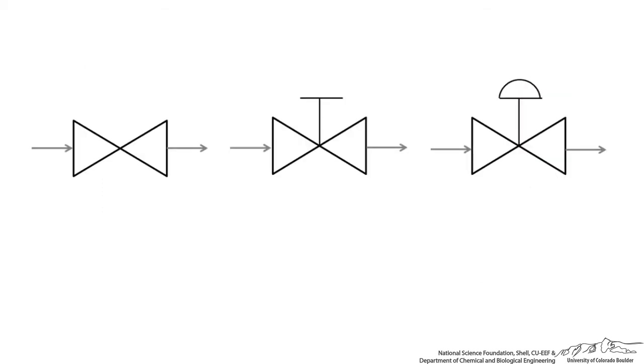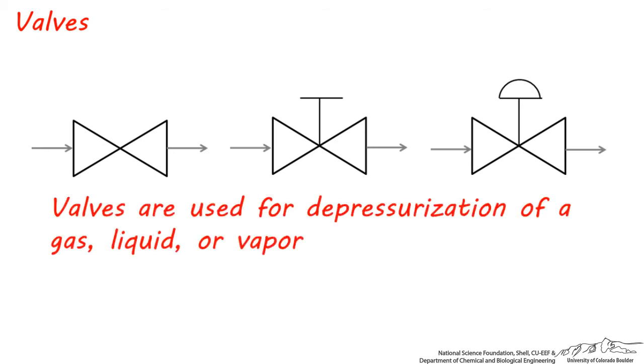You've probably seen these symbols on a variety of diagrams. They're especially prevalent on piping and instrumentation diagrams. See if you can remember what these are. These are all valves, and on a process flow diagram, they're used to depressurize a liquid, gas, or vapor stream.